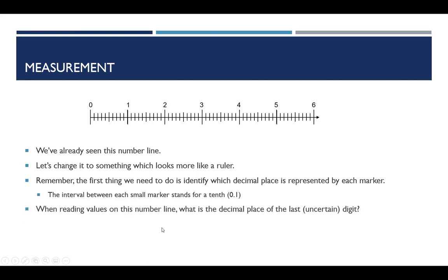So if we are going to read here, what is going to be the decimal place of the last digit? If the smallest intervals or markings are tenths, you go one decimal place to the right — hundredths. So those additional markings allow you to go that one greater decimal place. And this is usually how you're going to see most of the devices that we are going to read.